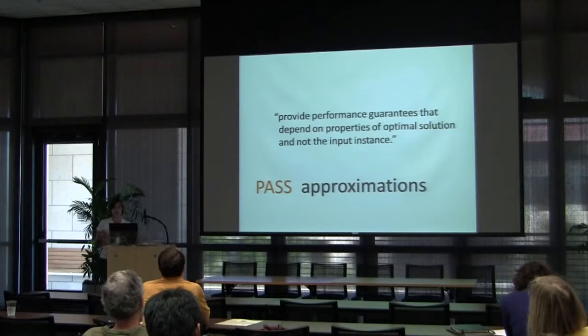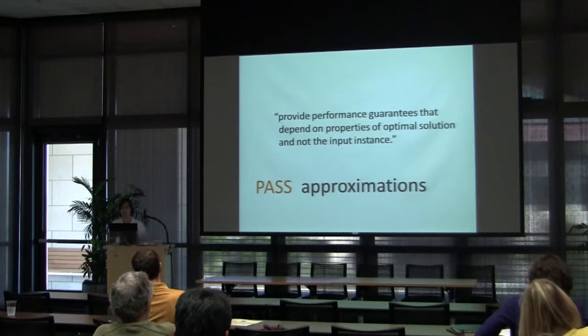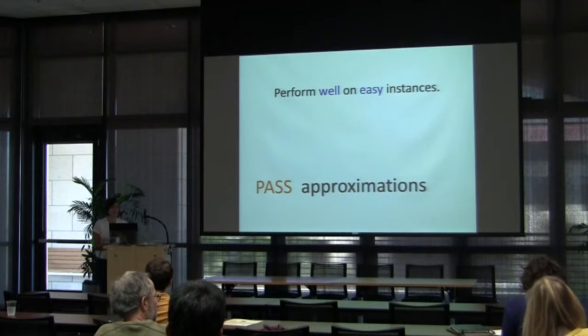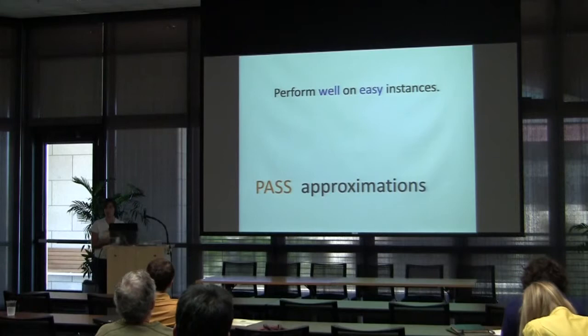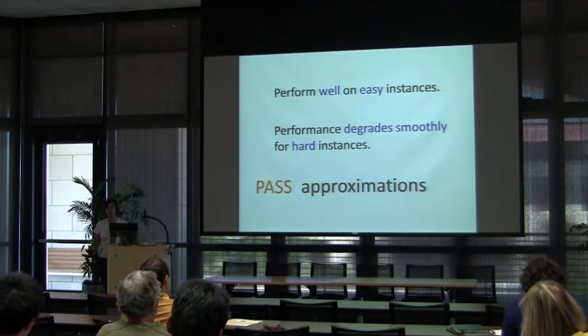The basic idea of PASS approximations is that we want to provide performance guarantees for heuristics that depend on some property of the optimal solution to the problem, as opposed to the actual properties of the instance itself. We would like a single algorithm that performs well on easy instances — as indicated by the optimal solution having high quality — and degrades smoothly as the instance becomes harder.